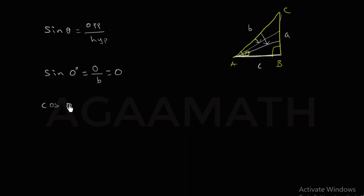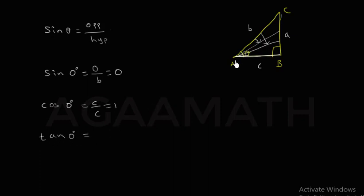Similarly, cos 0 degrees. The ratio of cos is adjacent by hypotenuse. As the angle gets to 0, the adjacent side is the same as the hypotenuse — both equal C units. So cos 0 = C/C = 1. And tan 0 degrees — opposite by adjacent — the opposite is 0, so 0 divided by the adjacent is 0.